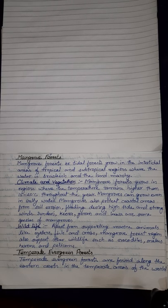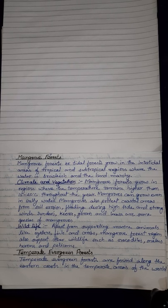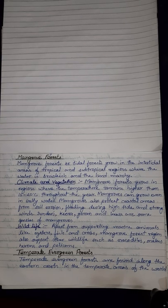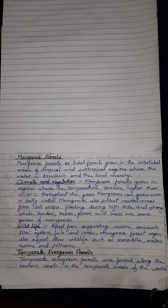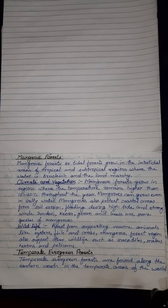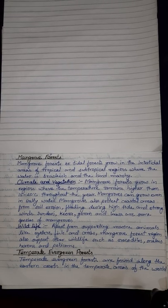Good morning everyone. Today we are going to study the Geography Chapter 6 of Class 7: Natural Vegetation and Wildlife. In the last class we studied about tropical evergreen forest and tropical deciduous forest in the forest section.